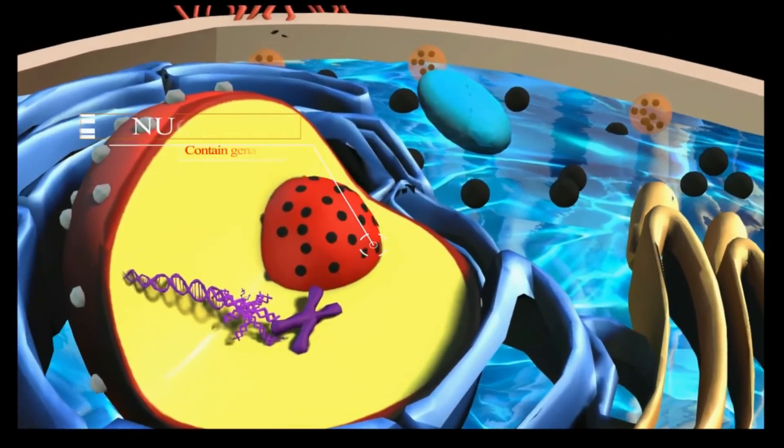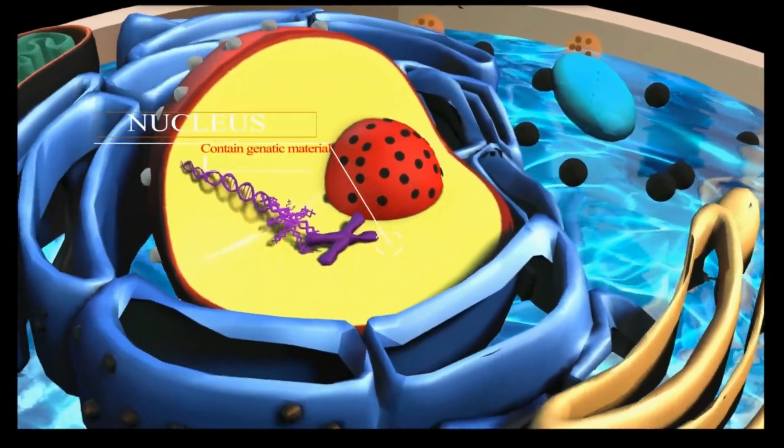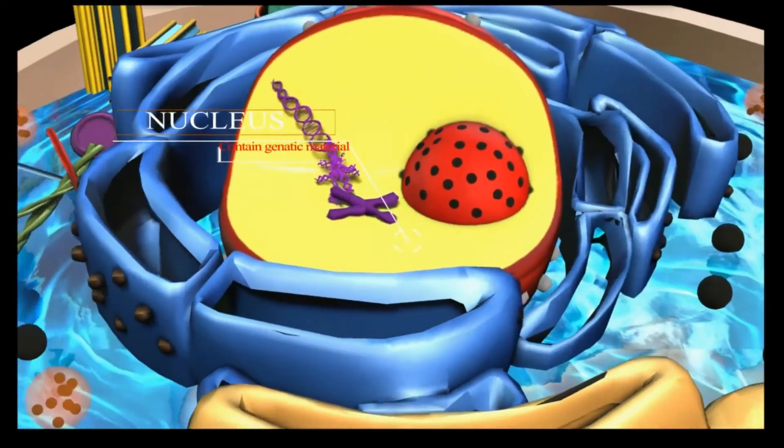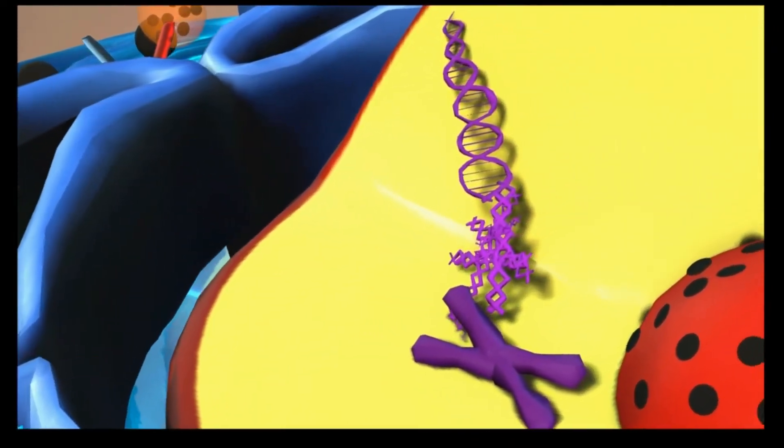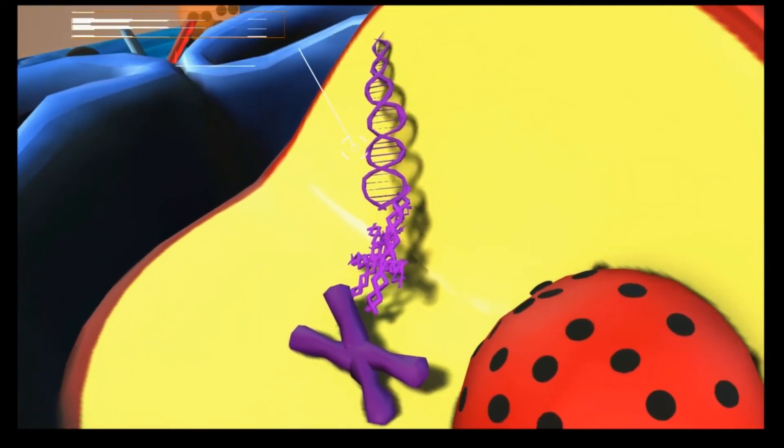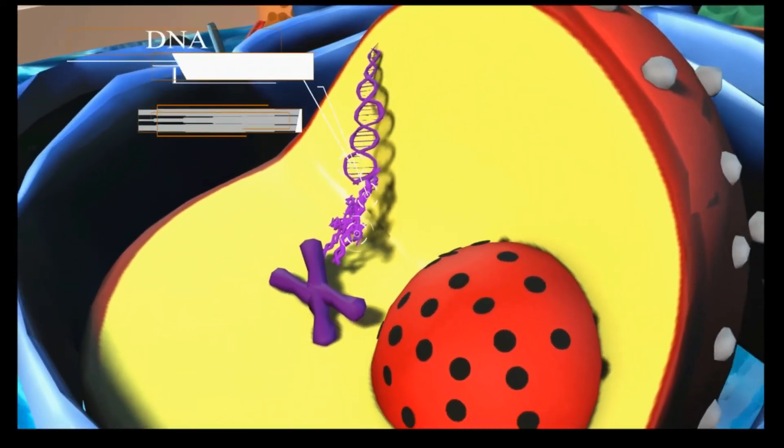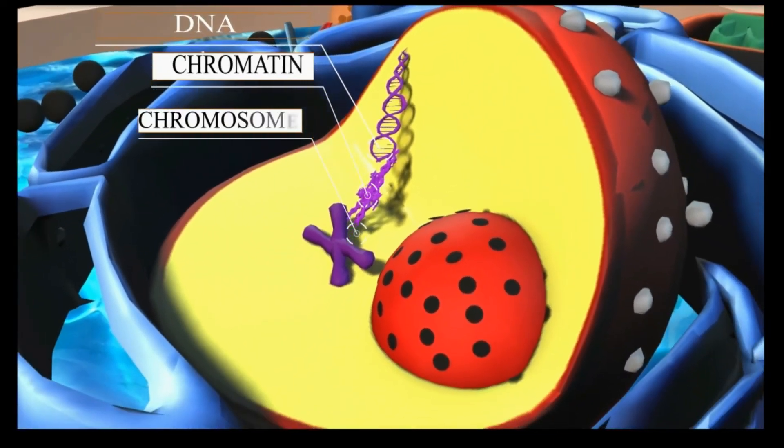The nucleus is an organelle found in the cells. Inside its fully enclosed nuclear membrane, it contains the majority of the cell's genetic material. This material is organized as DNA molecules, along with a variety of proteins, to form chromosomes.